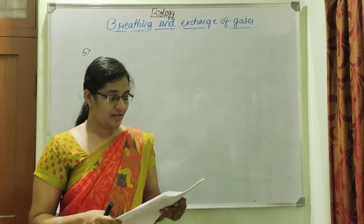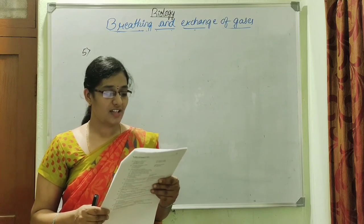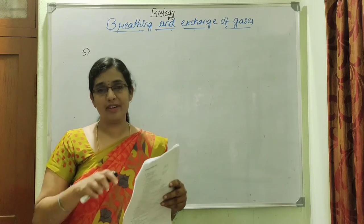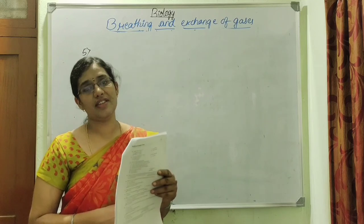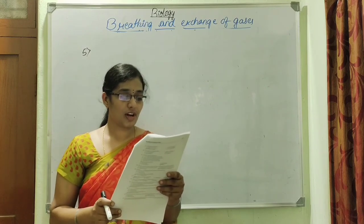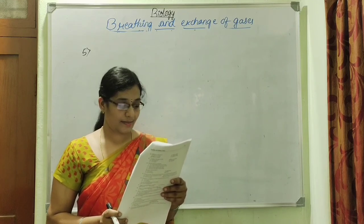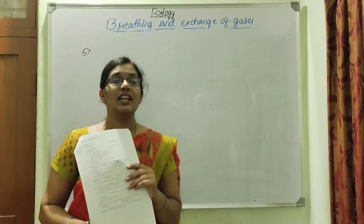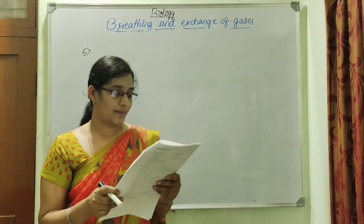Next question: Amphibians such as frogs respire through — A. moist skin, B. lungs, C. buccopharyngeal cavity, D. all of these. Answer: Option D — all of these. Next question: The adult frog does not respire through — A. buccopharyngeal cavity, B. gills, C. skin, D. lungs. Answer: Option B — gills. Only tadpoles, being purely aquatic, respire through gills; adult frogs do not have gills.